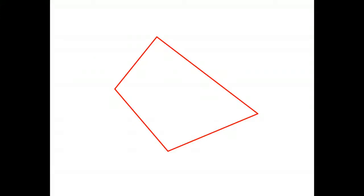Hello students. In the previous videos we looked at some geometry facts concerning triangles. Now we're going to look at a geometry fact that concerns what's called a quadrilateral. A quadrilateral is just a polygon with four straight sides.